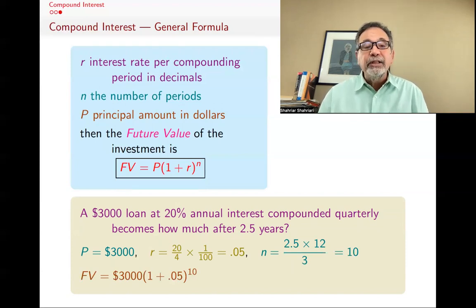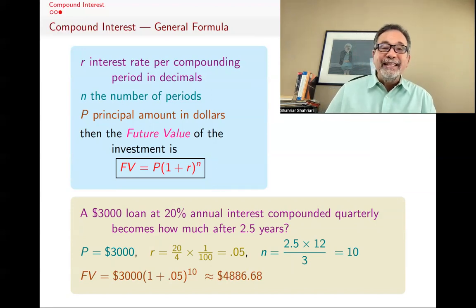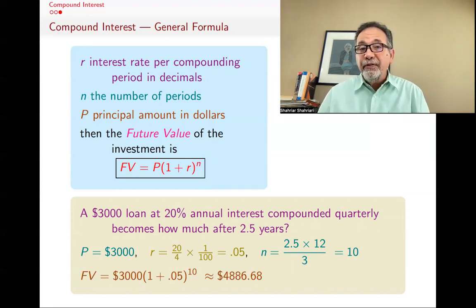And so what will the future value of this loan be? Well, 3,000 P times 1 plus r, 1 plus 0.05, raised to the power of 10. And that will be about $4,886.68. So about $1,800, more than 50% of the loan will be added to it.